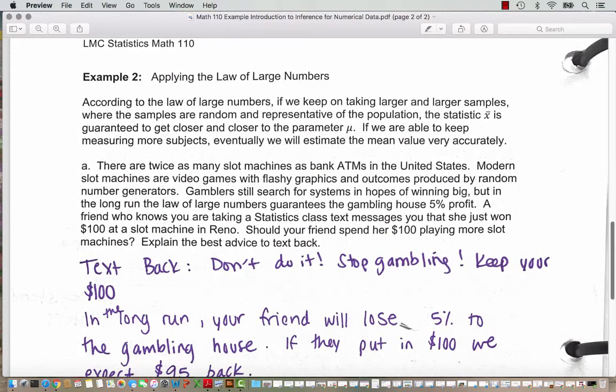Example 2, we are going to look at applying the law of large numbers. So according to the law of large numbers, if we keep on taking larger and larger samples, where the samples are random and representative of the population, the statistic X bar, which is the sample mean, is guaranteed to get closer and closer to the parameter mu, which is the population mean. If we are able to keep measuring more subjects, eventually we will estimate the mean value very accurately.